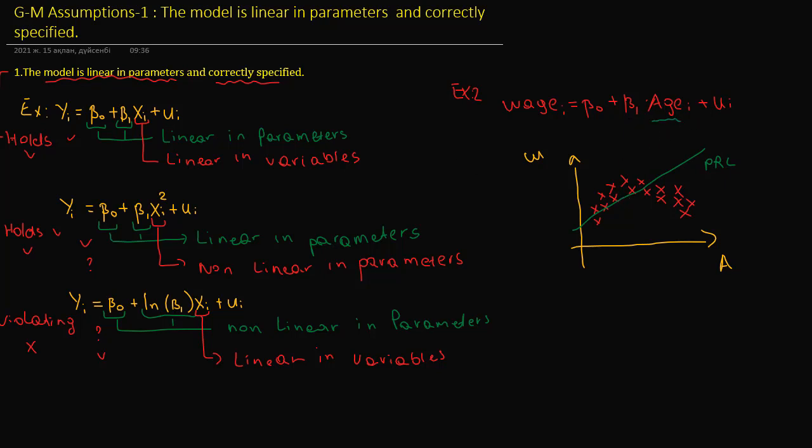Should it be beta0 plus beta1 times age, or should age be squared? This is about the functional form. That's all for today, thanks for watching my video.